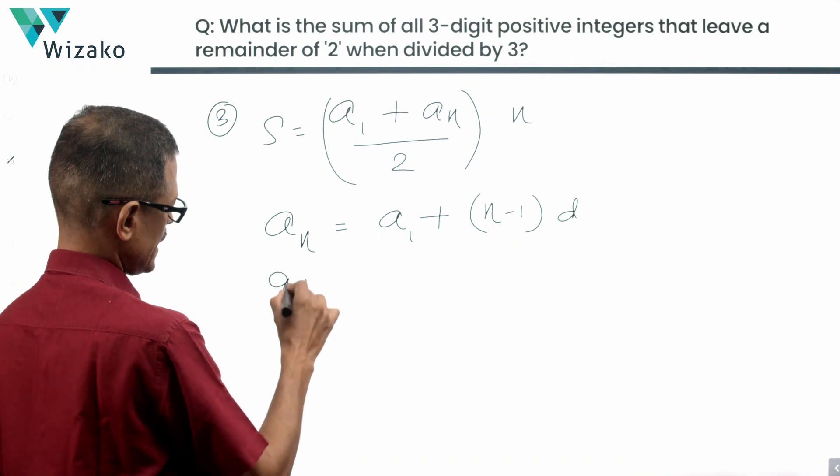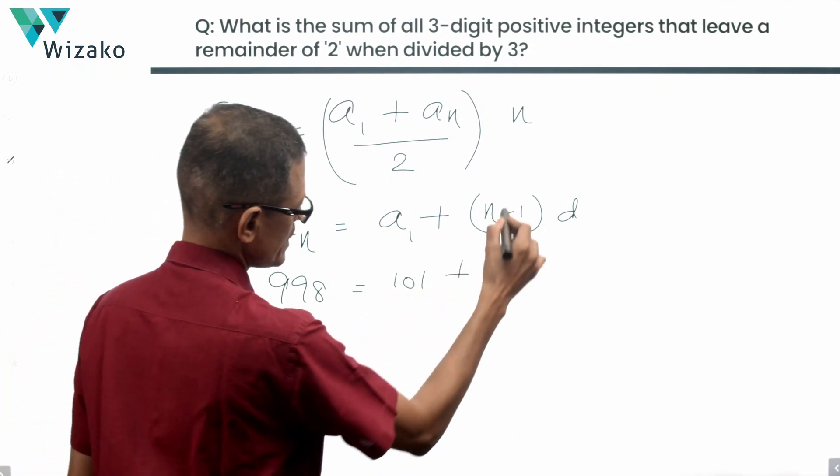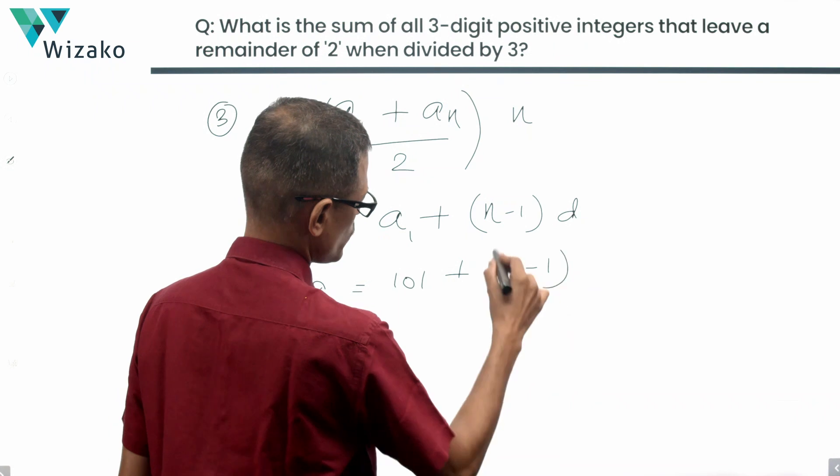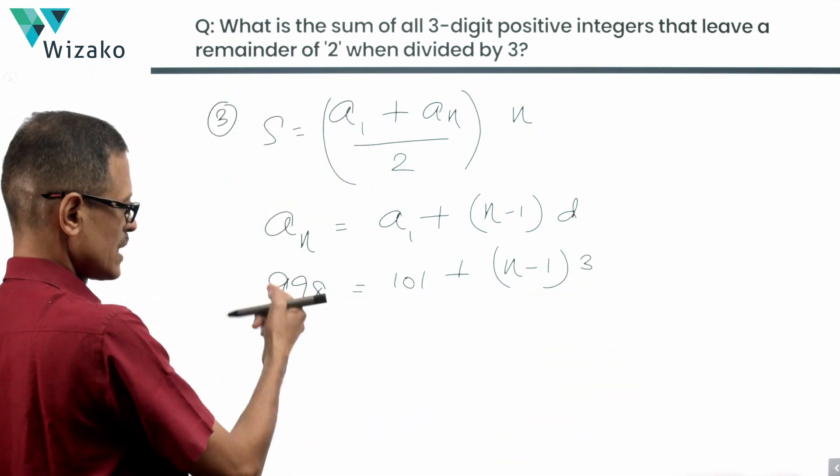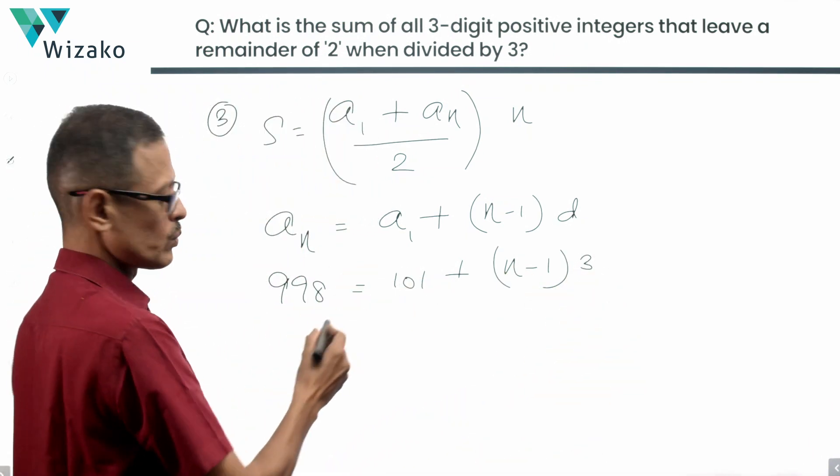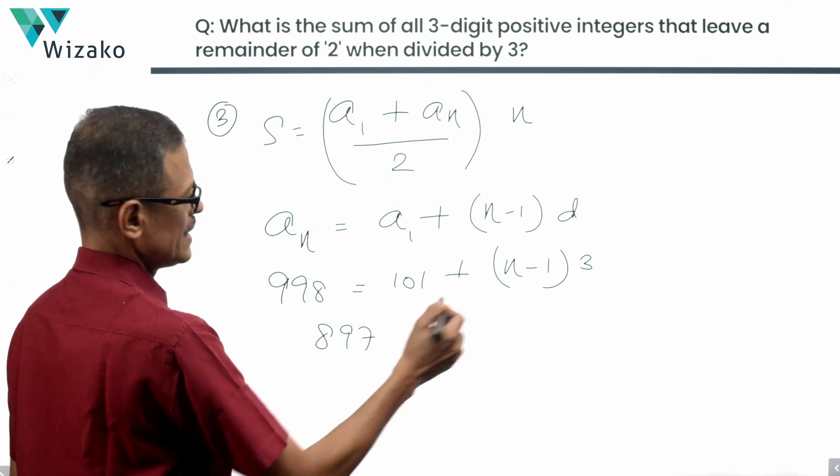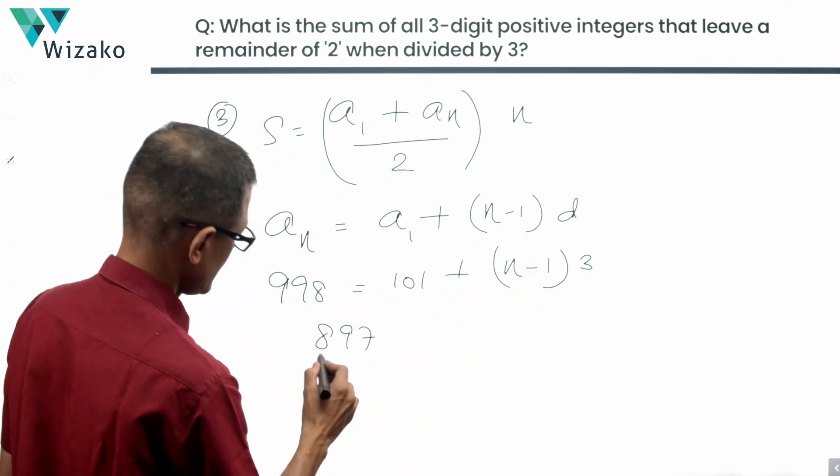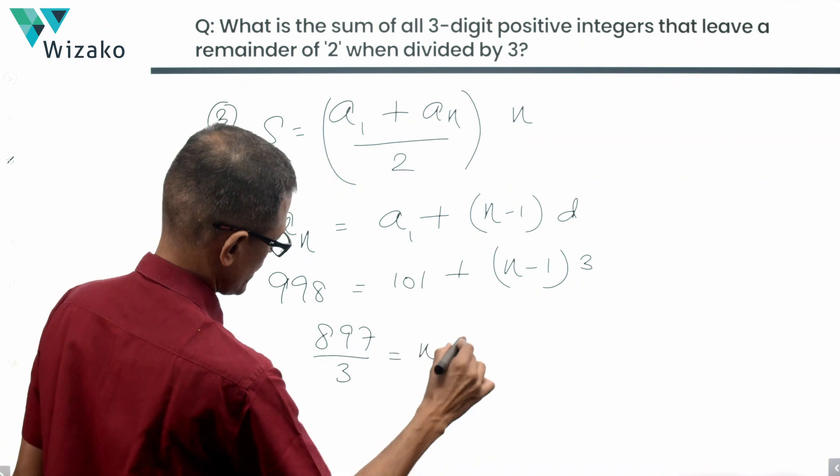An is 998. A1 is 101 plus n is what we are trying to find out, n minus 1 times 3. Take this to the left hand side. 998 minus 101 is 897, equal to 3 times n minus 1. So 897 divided by 3 is equal to n minus 1.